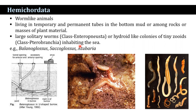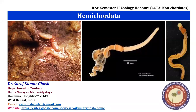Examples under Hemichordata include Balanoglossus, Saccoglossus, and Atubaria.